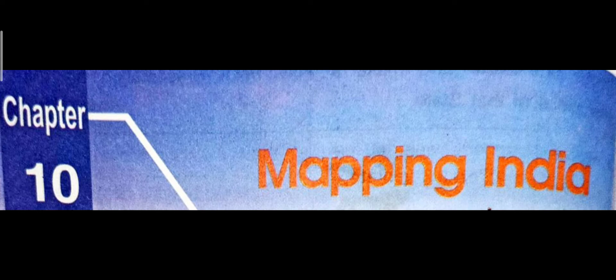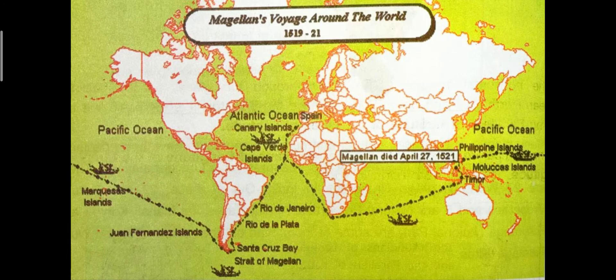Ferdinand Magellan, a Portuguese explorer, and his crew began a voyage — that means a journey — from Spain in 1519. Look at the map of the world. Almost two years later, the journey ended at the same place.